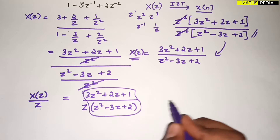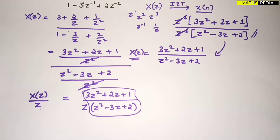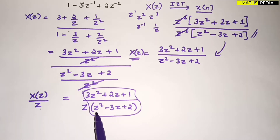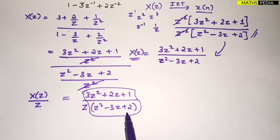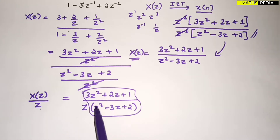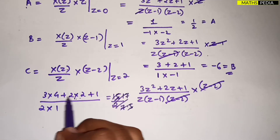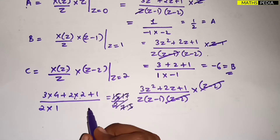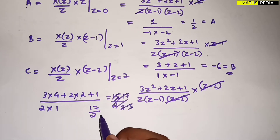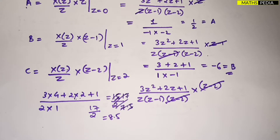Now observe the denominator. Whenever you get a quadratic form in the denominator, you have to convert it into linear factors — that means factorize it. You can do it using a calculator or by splitting the middle term. Factorizing z² − 3z + 2 gives (z − 1)(z − 2), so these are the linear factors.